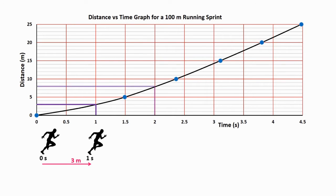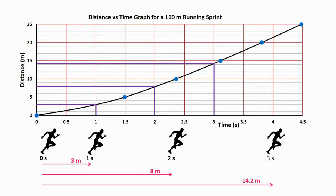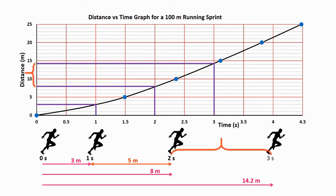After 2 seconds, I had covered about 8 metres. And after 3 seconds, I had covered about 14.2 metres. So in the first second of the sprint, between the gun going off and the 1 second mark, I travelled 3 metres. But in the second second, that is between the 1 second mark and the 2 second mark, I travelled 8 minus 3 metres, which is 5 metres. In the third second, that is between the 2 second mark and the 3 second mark, I travelled 14.2 minus 8 metres, which is 6.2 metres.